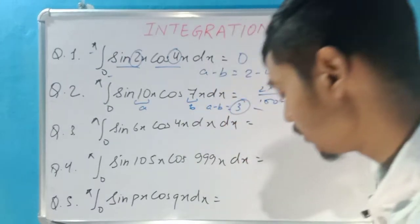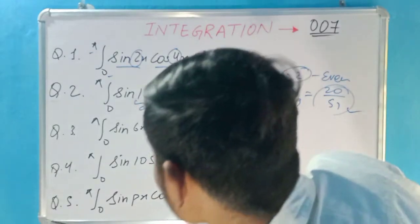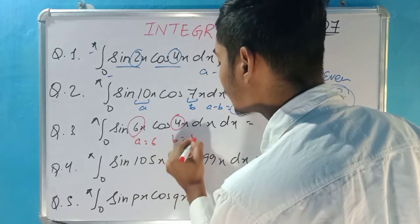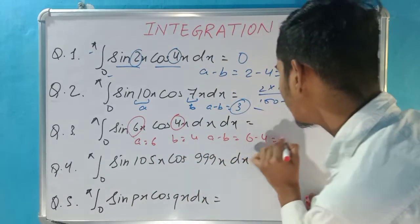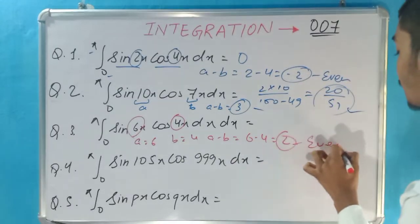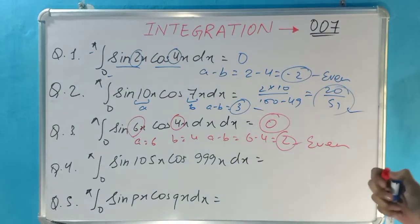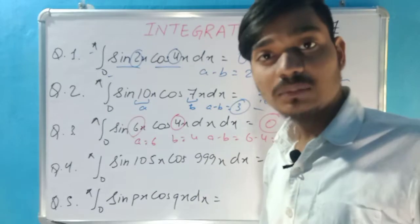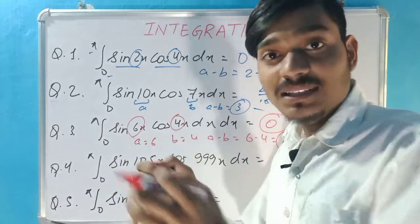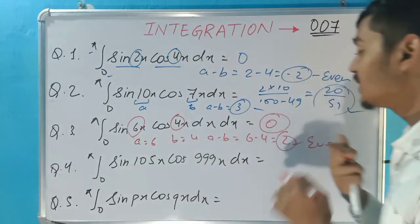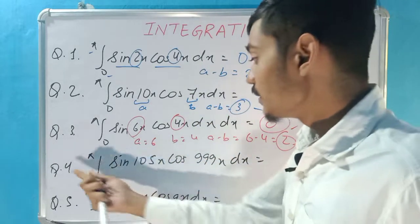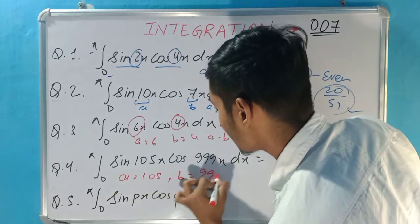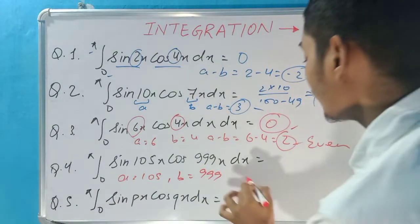Since a minus b is minus 2, which is an even number, the answer is simply 0 — solved in 2 to 3 seconds. For the second question, a is 10 and b is 7, so a minus b is 3, which is odd. Since it's odd we use the formula 2a over (a² − b²), giving 2 times 10 over (100 minus 49), which equals 20 over 51 as the required answer.